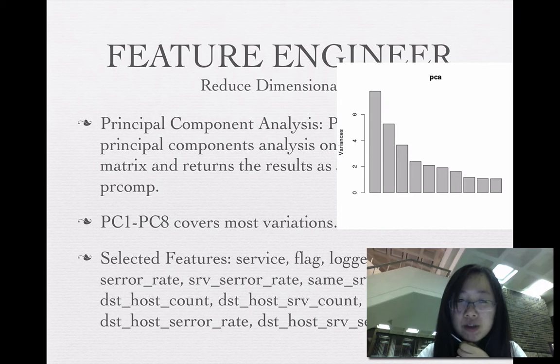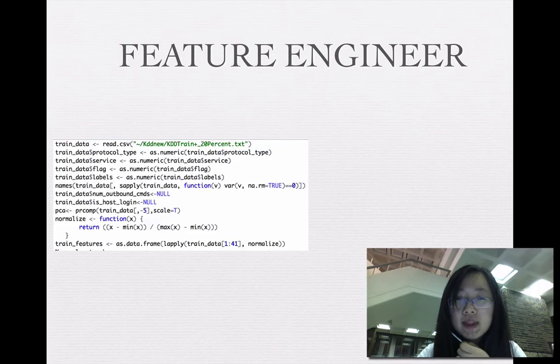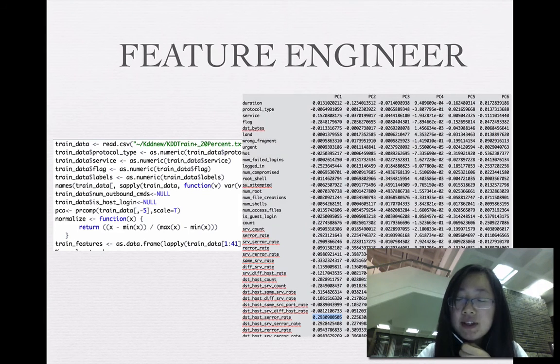So I use the following selected features to do my experiments. This is the code I use to do feature engineering. And this is the rotation of principal components analysis.